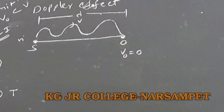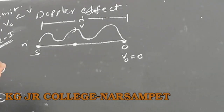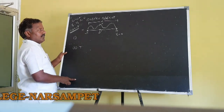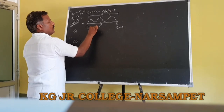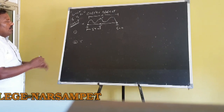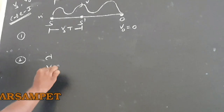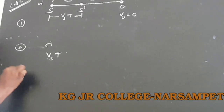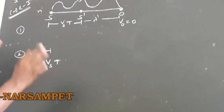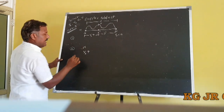At the same time, the source moves with velocity Vs. After T seconds, the source is at S'. The distance covered by the source is Vs × T. So the sound wave covered distance lambda, and the source covered distance Vs × T. The apparent change in wavelength: lambda dash equals lambda minus Vs × T.